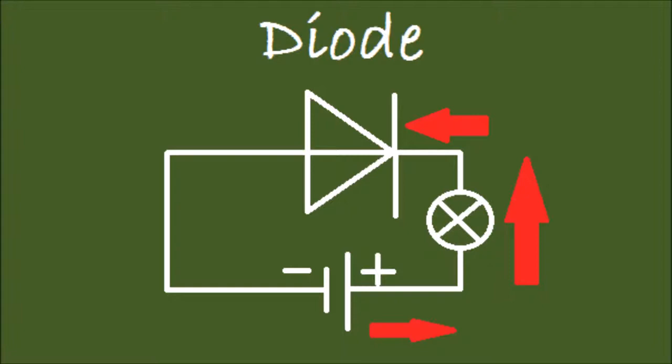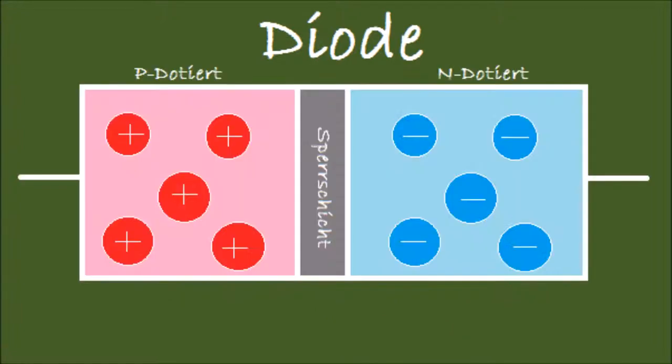The electrons try to go their way from the minus pole through the cables and the diode and the lamp to the plus pole. But unfortunately the electrons cannot pass the diode. That means there is no current and no shining lamp, we are sitting in the dark.